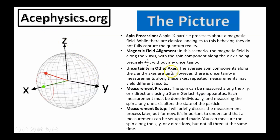That is not the case with the z and the y-axis. The other two axes have uncertainty. The average spin component along the z and y-axis are zero. However, there is uncertainty in the measurement along these axes — repeated measurements may yield different results. The spin can be measured along the x, y, and z directions using a Stern-Gerlach type apparatus. Each measurement must be done individually, and measuring the spin along one axis alters the state of the particle.